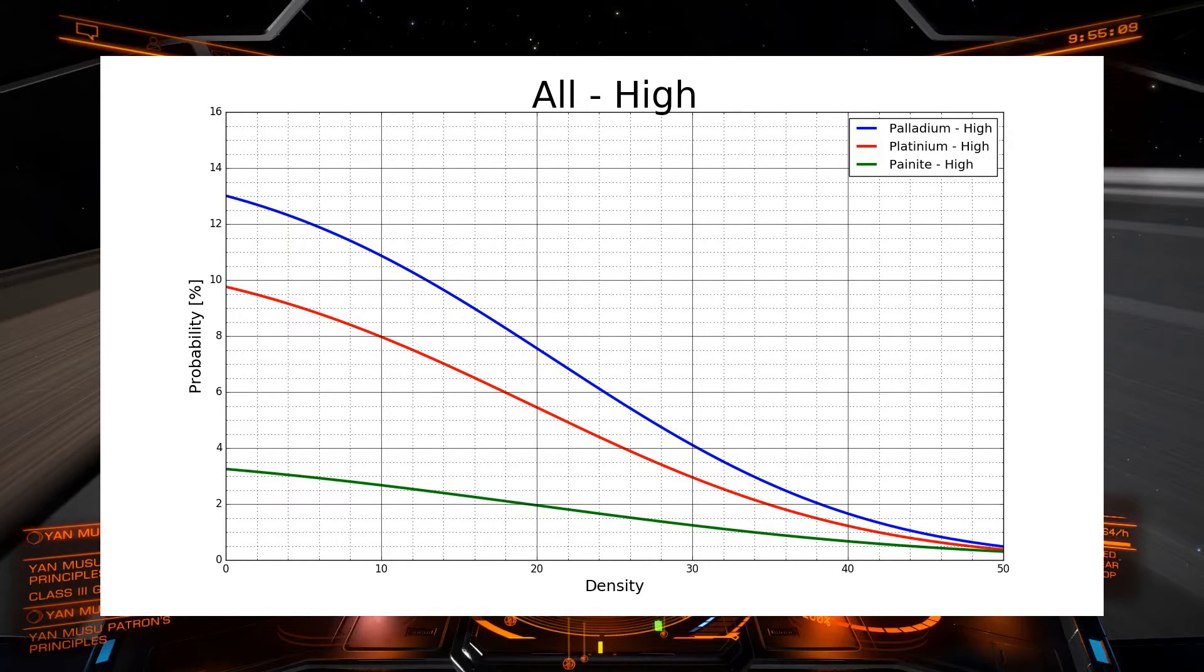An interesting thing to note is that they all seem to converge towards around half a percent, regardless of their initial values. So that's the graph for the high density area.